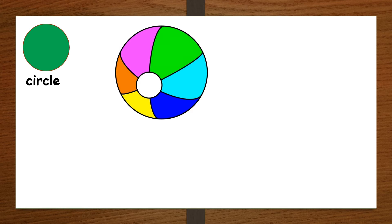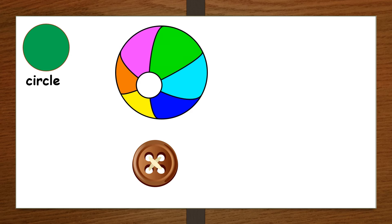What is this, class? It's a ball. The ball is a circle. What is this? It's a button. You know what a button is? On your shirt — a button. The button is a circle.